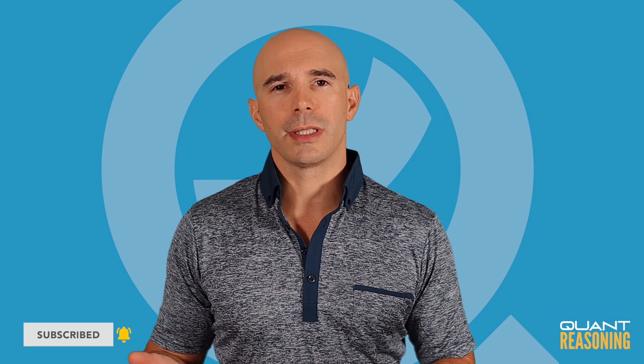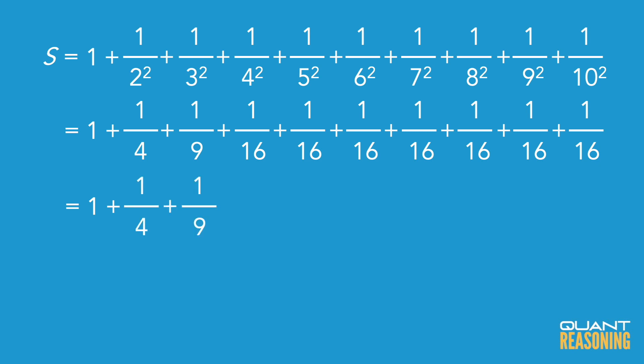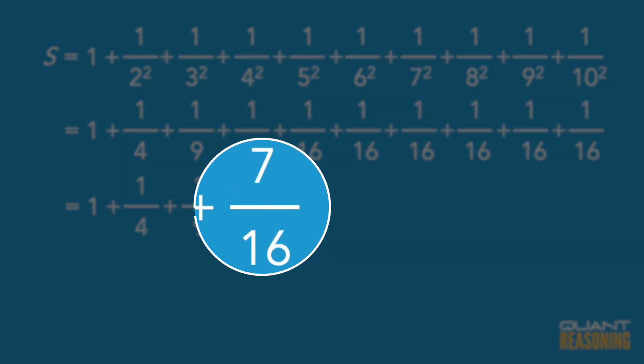So I'm going to have to go one more term in. Instead of just one plus a quarter, I'll say one plus a quarter plus one ninth, and then pretend the remaining seven terms are all equal to one over 16. One plus a quarter plus one ninth is approximately one and a third — it's less than one and a half, because one plus a quarter plus a quarter would be one and a half, and we have one ninth instead. If the remaining seven terms were all one over 16, that's seven over 16, which is just slightly under one half, since eight over 16 would be exactly half.